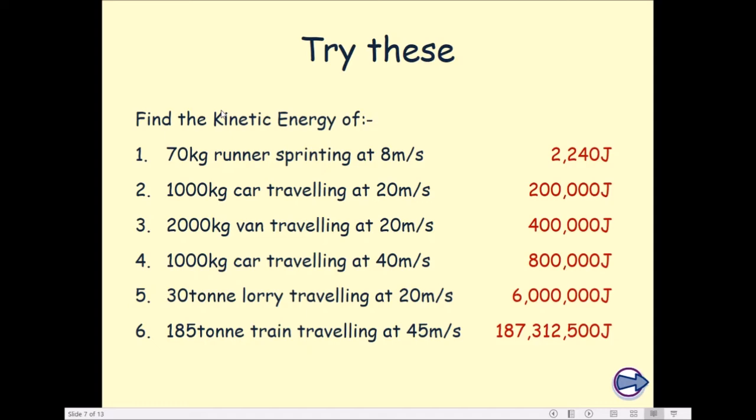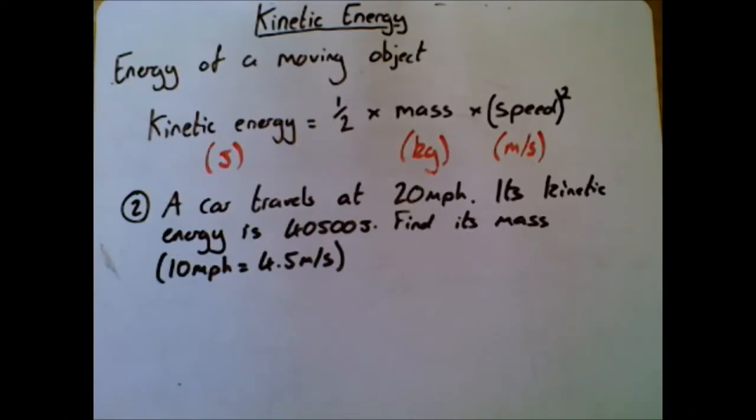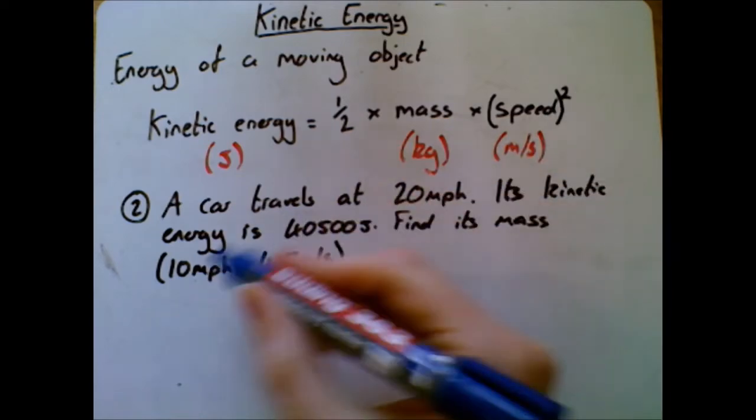Okay, right, let's go back then to another example. A car travels at 20 miles per hour, its kinetic energy is 40,500 joules, find its mass. Now, by the way, this is actually a past exam question.